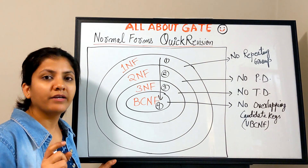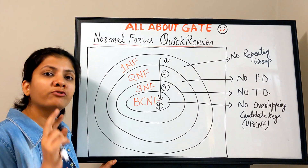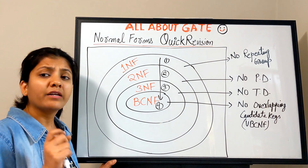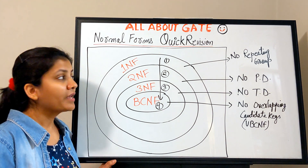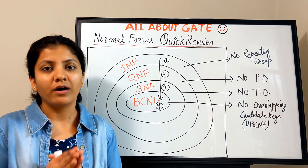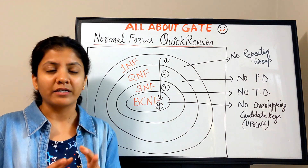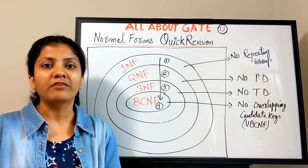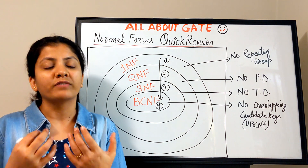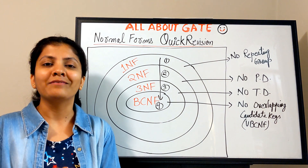One more important point: every binary relation — a relation with only two attributes — is always in BCNF. The reason will be explained further with examples. We will now solve many questions on these normal forms from standard books and previous year GATE questions, and after that we'll cover decomposition and its required properties. See you soon — take care, bye.